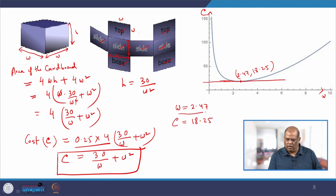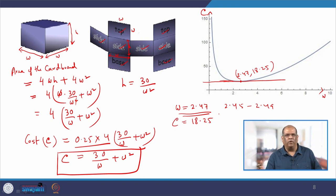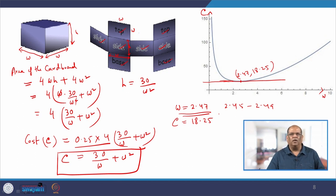You can vary W slightly, say from 2.45 to 2.49 — the cost will increase or decrease a bit, but the effect on the box is similar. That is in the hands of the modeler and the company to decide the realistic dimensions of the box. This is another example of how mathematical modeling can create a scenario that matches a real-life scenario.